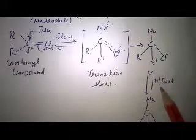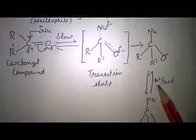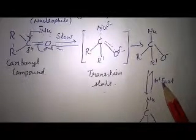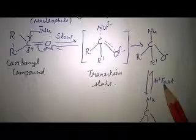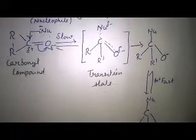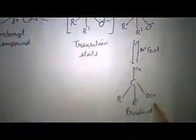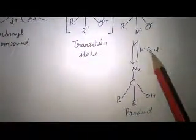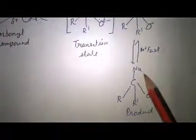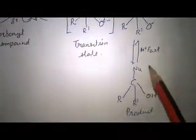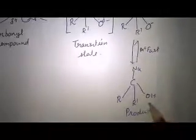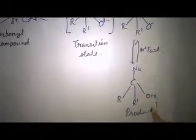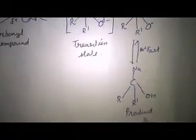For the reaction to complete, it will react with hydrogen ions. By reacting with H+ ions, this reaction is fast. The H+ ions react with the negatively charged oxygen. Then a product is formed.